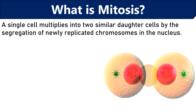First let us discuss what is mitosis. Mitosis is a type of cell division in which a parent cell divides into two genetically identical daughter cells, which means both the daughter cells will have the same number and same kind of chromosomes as the parent nucleus. So we can also consider it as a process of cell duplication.